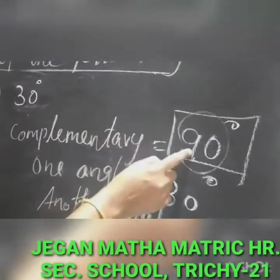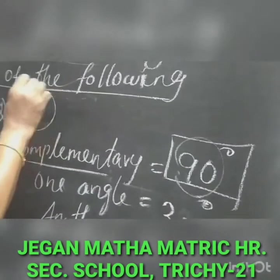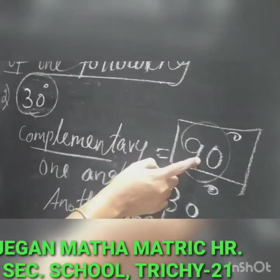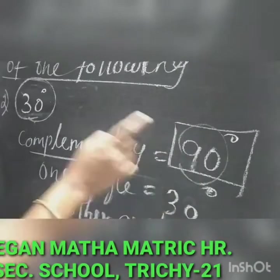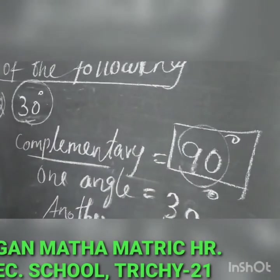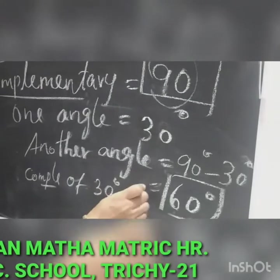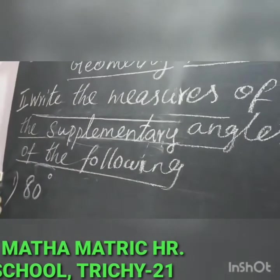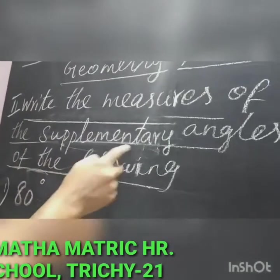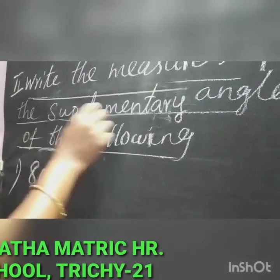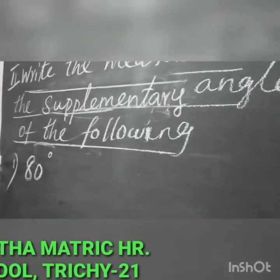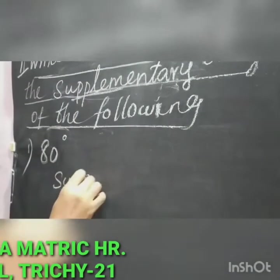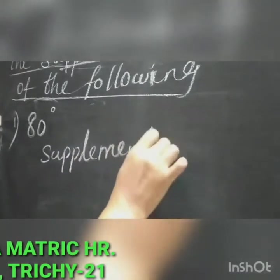The sum of the two angles is 90 degrees — that is called complementary angles. One angle is given, so for the pair of the other angle, you have the total 90 degrees. You subtract from 90: 90 minus 30 gives balance 60 degrees. So the complementary of 30 degrees equals 60 degrees. Is it clear?